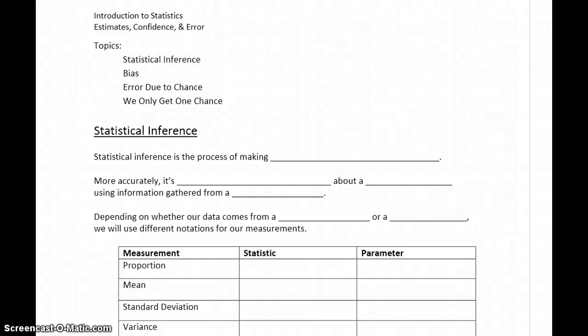In this section we start introducing the basic ideas of using sample data to construct estimates about the population. This is one type of process that falls under the umbrella of statistical inference. In short, statistical inference is the process of making really good guesses.